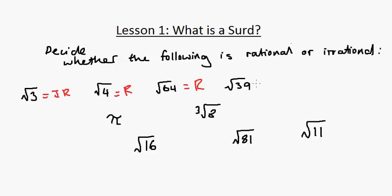Pi, as we mentioned, is irrational. The cube root of 8 is just 2 times 2 times 2, so that's rational.